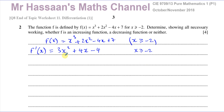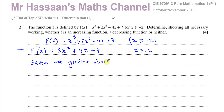Now I'm going to see for what values of x this gradient function is positive and for what values it is negative. I'm going to sketch the gradient function to see where it is a positive gradient and where it is a negative gradient. To do this, I first want to find where the gradient function equals 0, so I set 3x squared plus 4x minus 4 equals 0 and I'm going to try to factorize this.